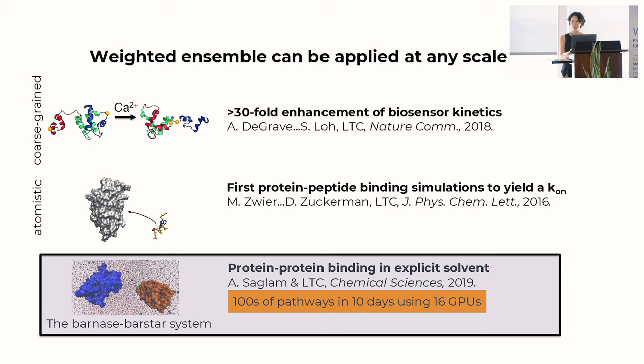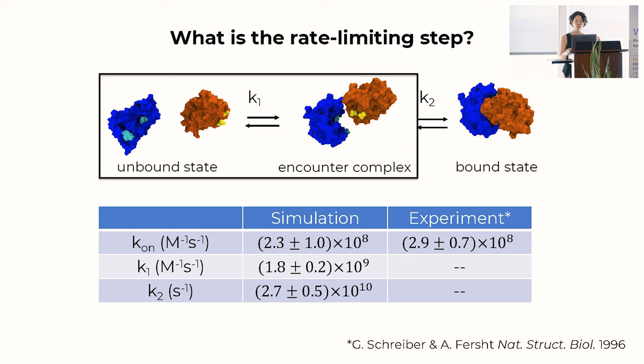We also reported what, to my knowledge, are the first protein-peptide binding simulations to yield a rigorous on-rate. The last example is protein-protein binding simulation in explicit solvent — the one I showed a movie of — involving two bacterial proteins that come together very rapidly: the Barnase-Barstar system. This was very practical even back in 2019: hundreds of pathways in 10 days using 16 GPUs. We can calculate the rate constant for the overall binding process — the K_on — and it shows reasonable agreement with experiment.